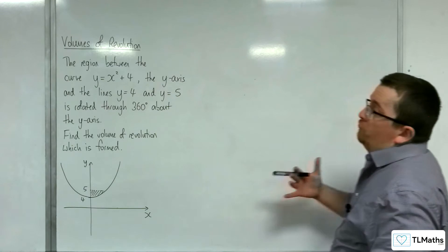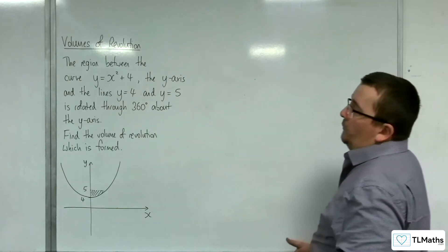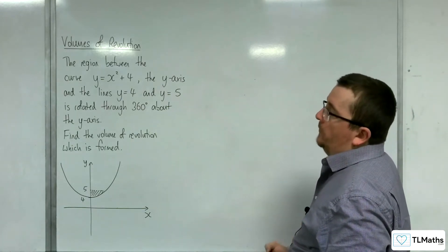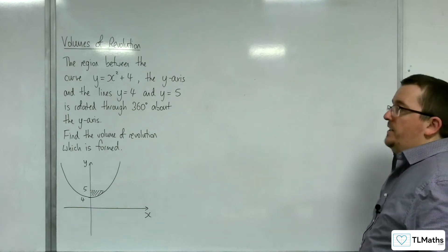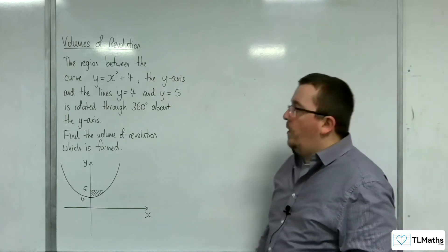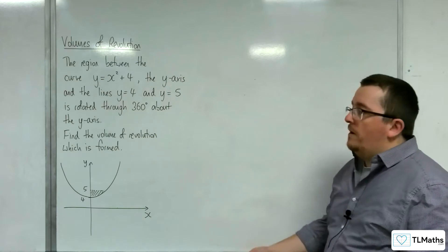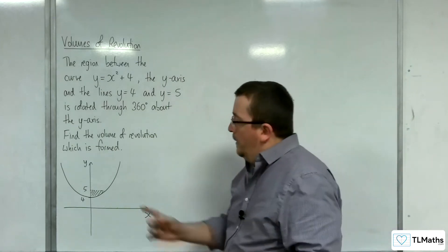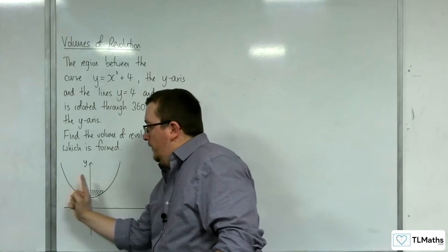In this video, the region between the curve y equals x squared plus 4, the y-axis, and the lines y equals 4 and y equals 5, is rotated through 360 degrees about the y-axis. Find the volume of revolution which is formed. So this time, we are going about the y-axis.